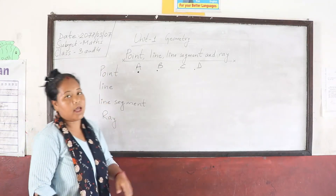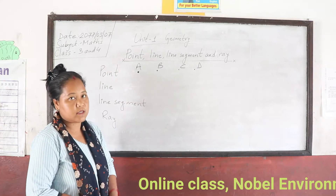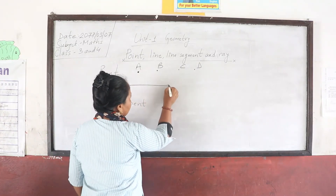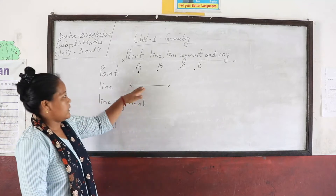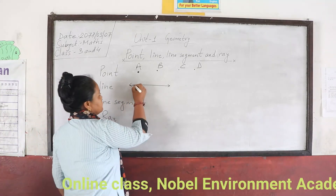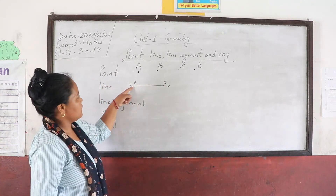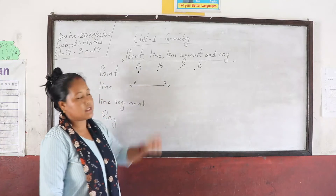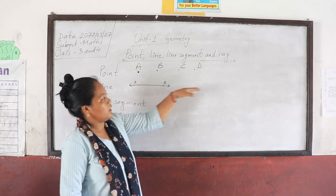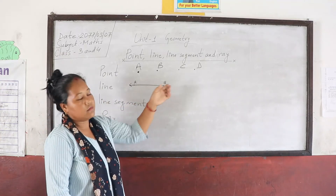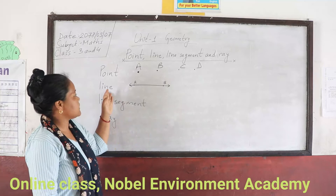Now, what is a line? A line has no endpoints. Here is a picture of a line — it has no endpoints. There are two points A and B; this line goes through these two points A and B. I have given arrows here — arrows mean it can extend infinitely. We can extend it in both directions, so it has no endpoints.